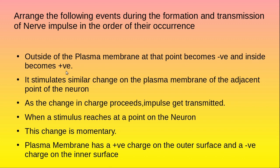The events to arrange are: outside of the plasma membrane at that point becomes negative and inside becomes positive; it stimulates similar change on the plasma membrane of the adjacent point of the neuron; as the change in charge proceeds, impulse gets transmitted; when a stimulus reaches at a point on the neuron; this change is momentary; the plasma membrane has a positive charge on the outer surface and a negative charge on the inner surface.